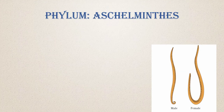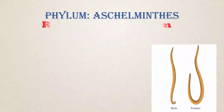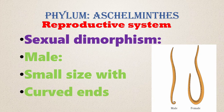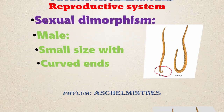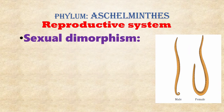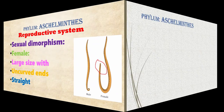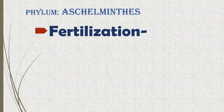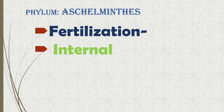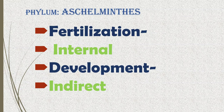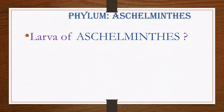Sexual dimorphism: male Ascaris is small in size with a curved end, while female Ascaris is large in size with an uncurved end. Fertilization — the fusion of male and female gametes — occurs internally within the female body. Development is indirect, meaning Aschelminthes have a larval stage that changes into an adult; the larval form of Aschelminthes is called a rhabditiform larva.